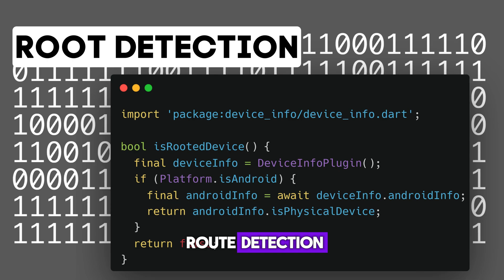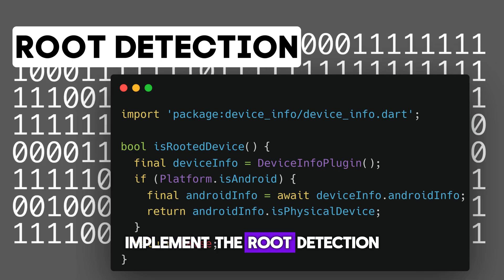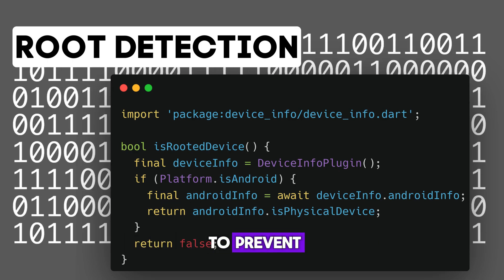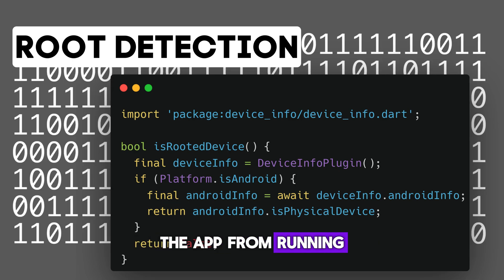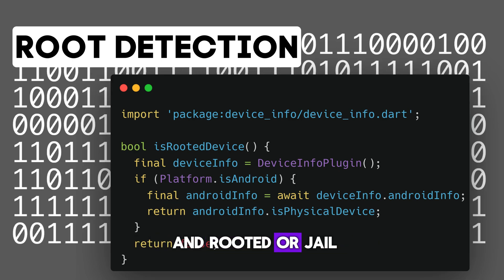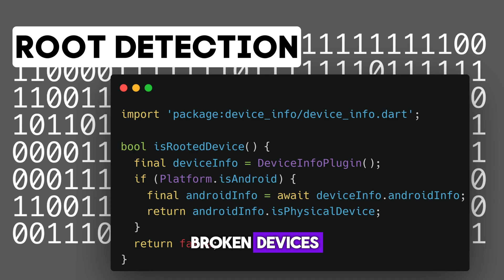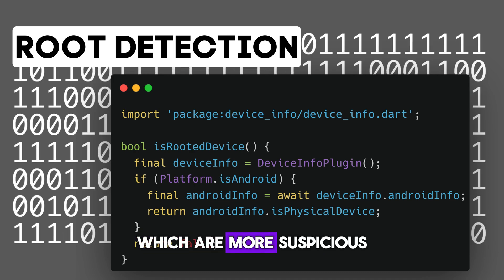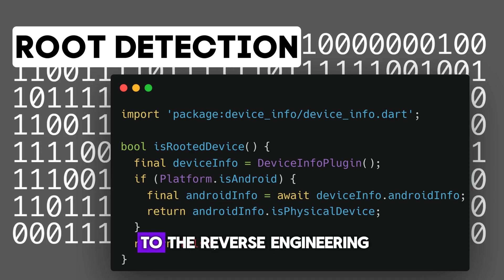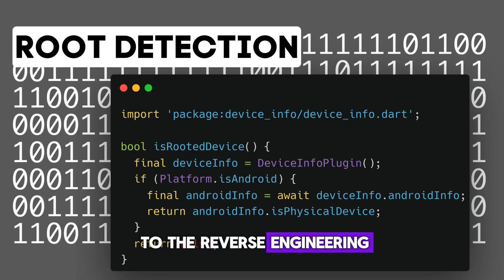The next one is root detection. Implement root detection to prevent the app from running on rooted or jailbroken devices, which are more susceptible to reverse engineering.